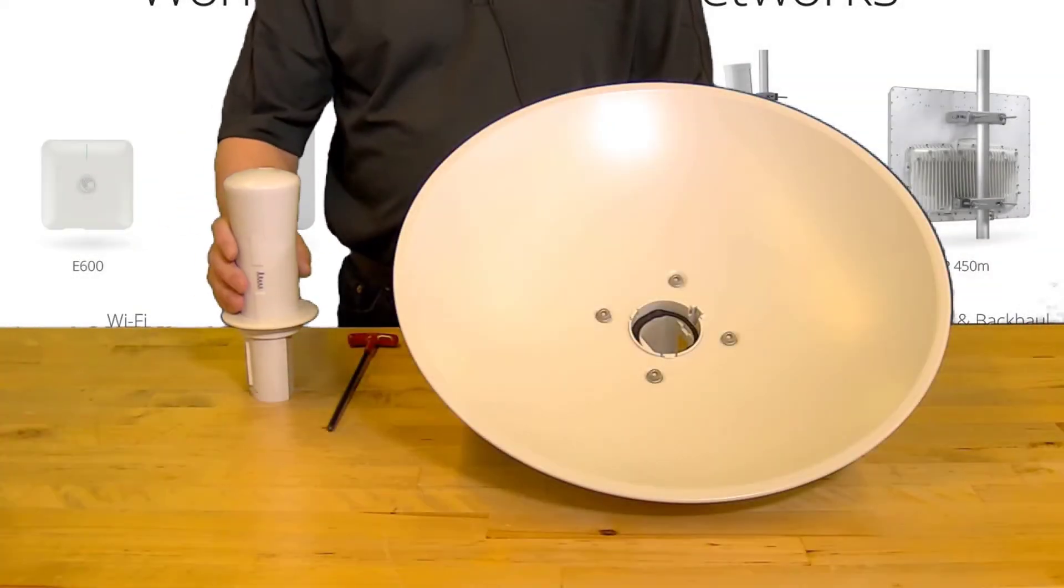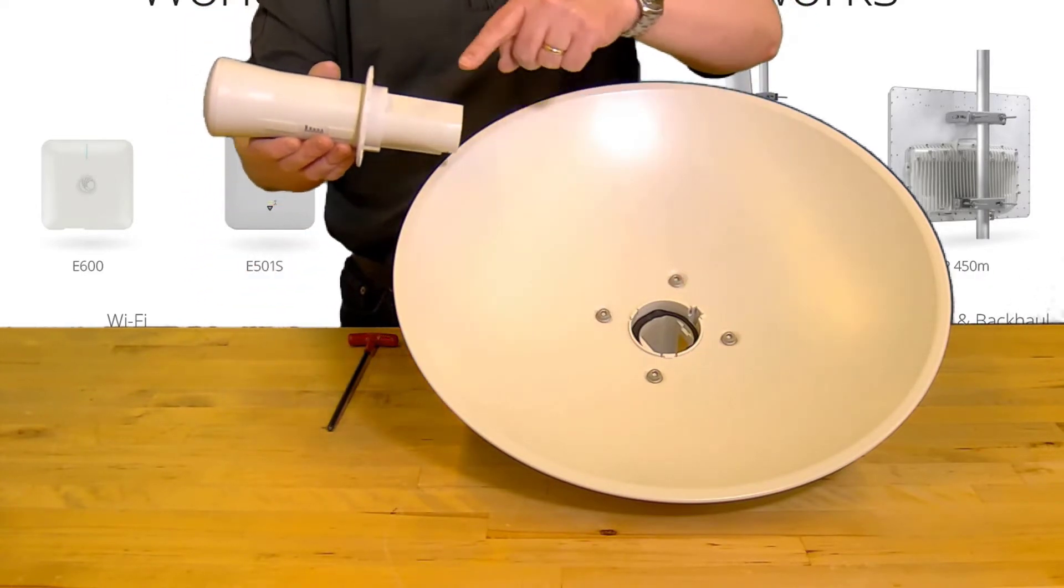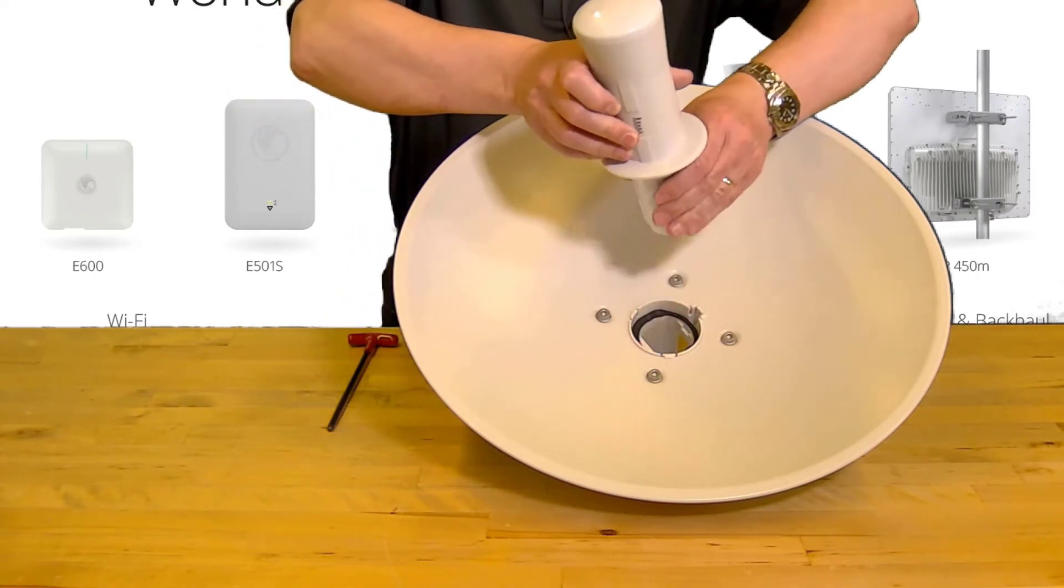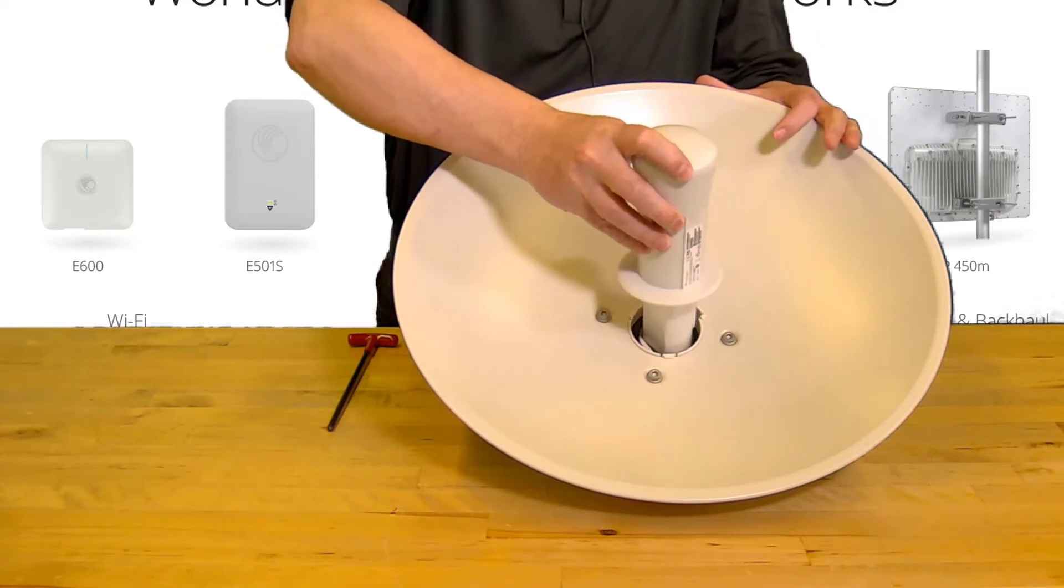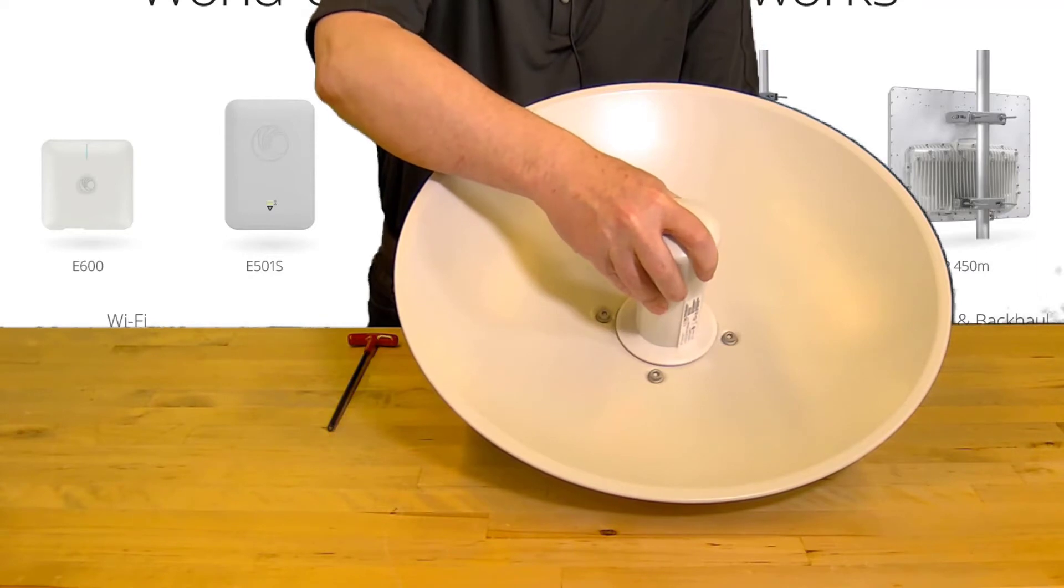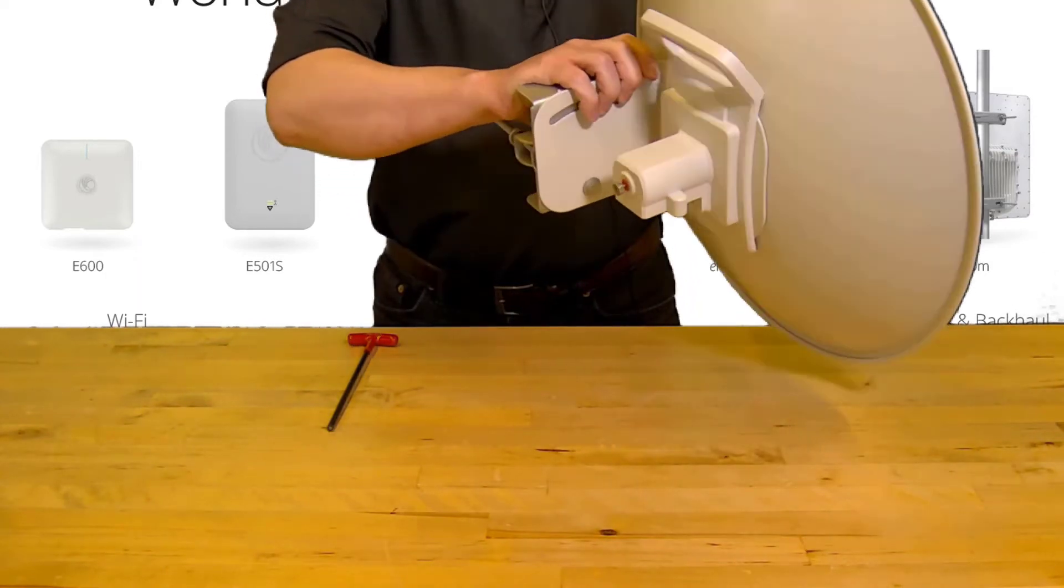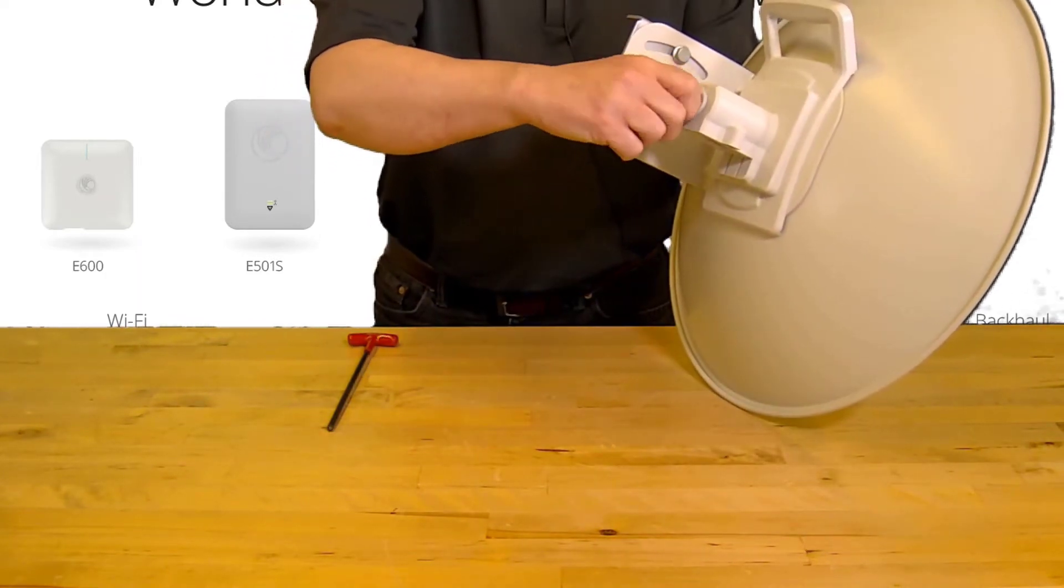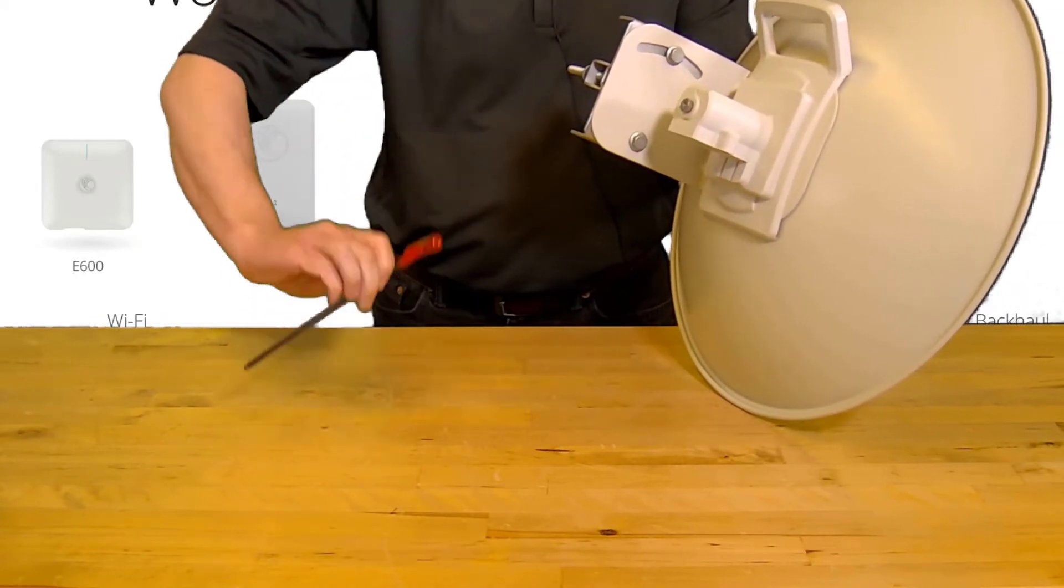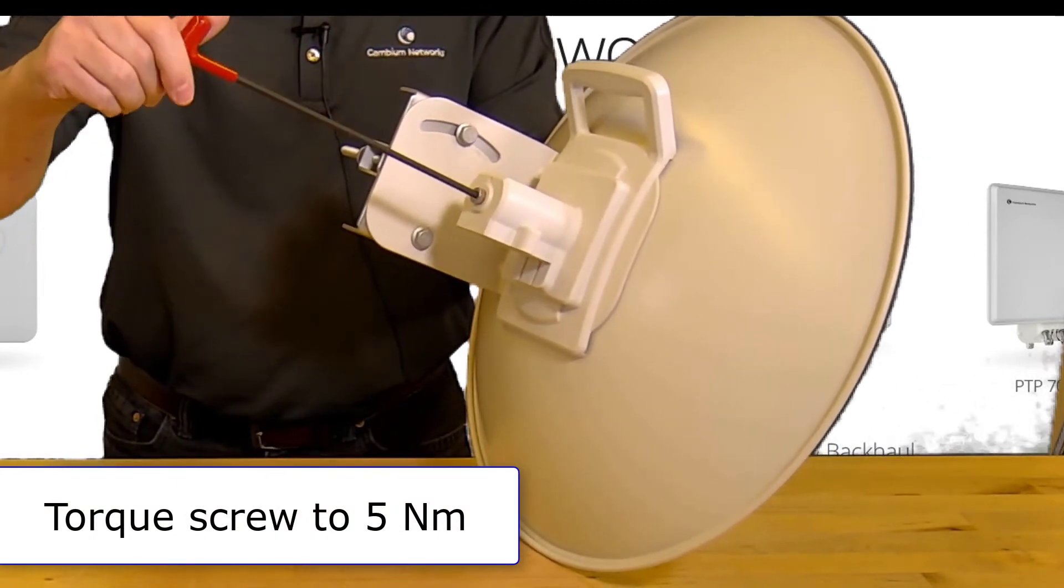Now attach the center feed tube to the dish assembly. Insert the tube through the center hole, making sure that the flat side of the tube lines up with the equivalent part of the receptacle in the rear mount bracket. Check that the tube is fully seated in the receptacle before securing it with the captive safety screw on the rear mount bracket. Torque this screw to 5 Newton meters using the M5 hex driver.